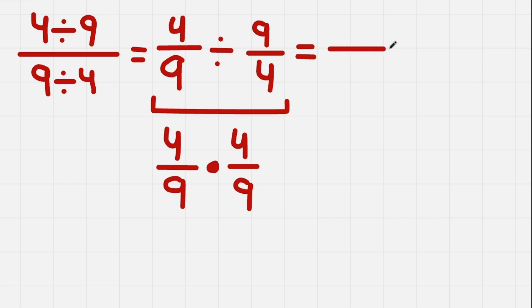So in the end, we get 16—4 times 4—divided by 81. And that is the final answer.